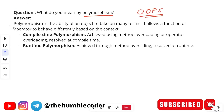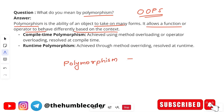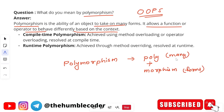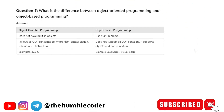Next question: What do you mean by polymorphism? OOP is heavily asked, so pay attention. Polymorphism is the ability of an object to take many forms — it allows a function or operator to behave differently based on context. The word itself comes from 'poly' meaning many and 'morphism' meaning forms. Compile-time polymorphism is achieved using method overloading or operator overloading, resolved at compile time. Runtime polymorphism is achieved through method overriding, resolved at runtime.